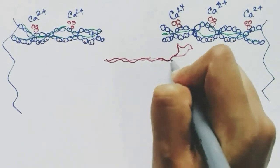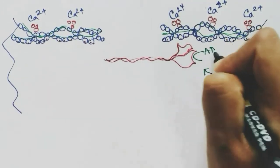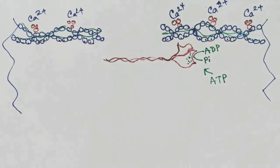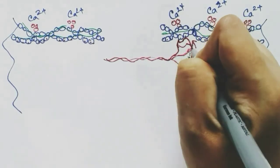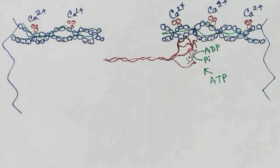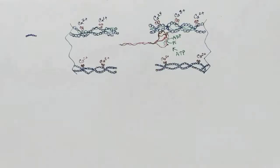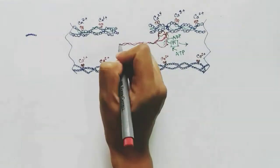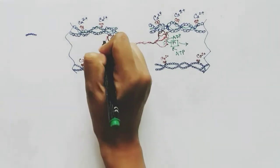The thick filament, or myosin, has an ATP binding site where ATP binds and forms ADP and phosphate, storing some energy. At that time the myosin head moves up and attaches to the thin filament, or the actin subunit. When it attaches to the thin filament, the phosphate is released, and this occurs on both sides of the myosin filament.